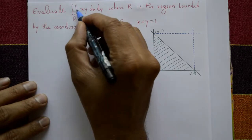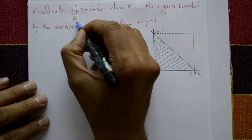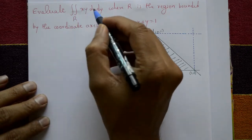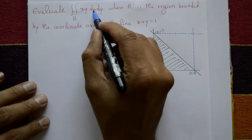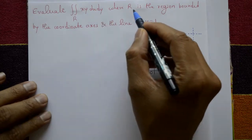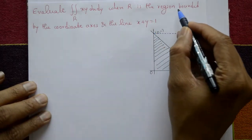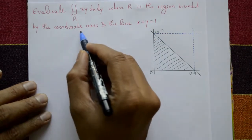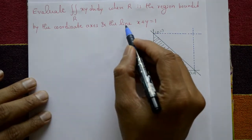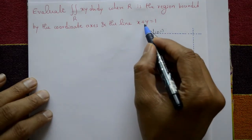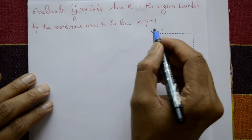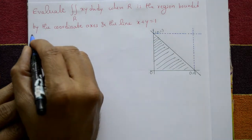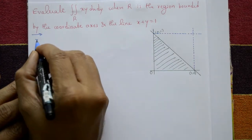Evaluate the double integral over region R of f(x, y) = xy dx dy, where R is the region bounded by the coordinate axes and the line x plus y equal to 1.